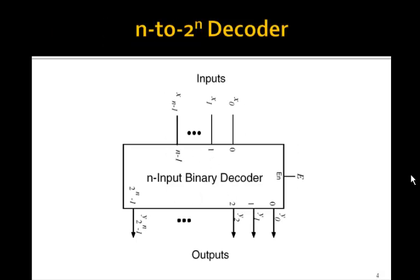So in general, a decoder will have N inputs and 2 to the N outputs. And often there's an enable signal. If this enable signal, for example, is 1, then it behaves as a binary decoder. Otherwise, all of the outputs are either all high or all low, depending upon whether the outputs are active high or active low.